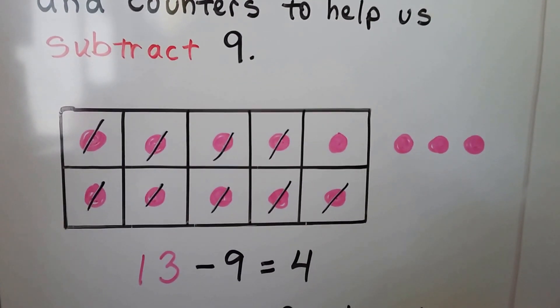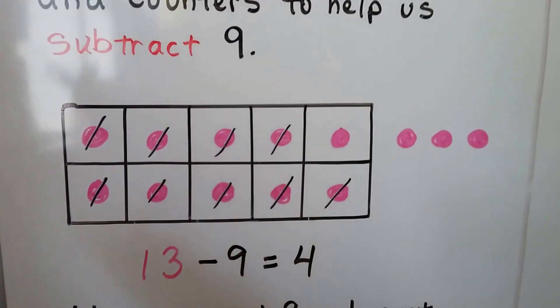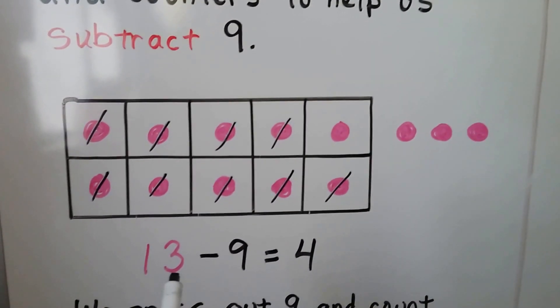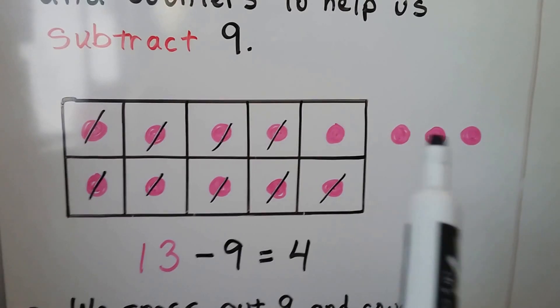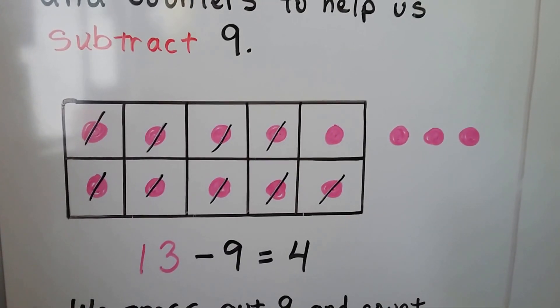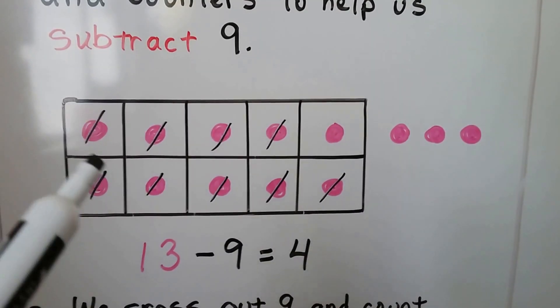You fill out however many the minuend is. Remember the first number is the minuend, so we have 13. So we fill our 10 frame and add 3 more to have 13. Then we cross off 9 of them.